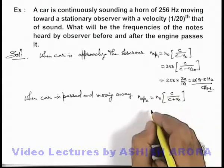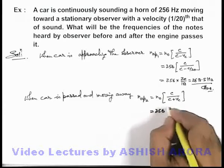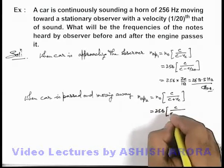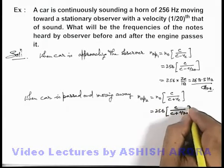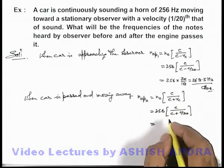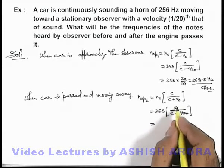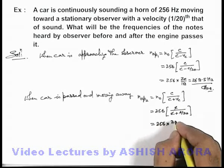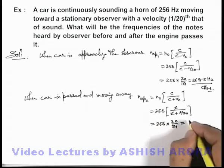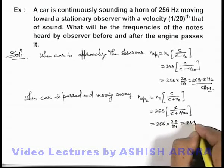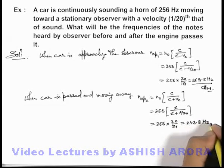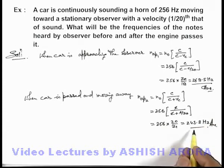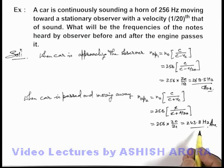This'll be 256 × c/(c + c/20). On substituting the values, the c gets cancelled out, and here it is 256 × 20/21, which is 243.8 Hz. That'll be another answer to this problem or the frequency which the observer will hear when the car has passed and is moving away from the observer.